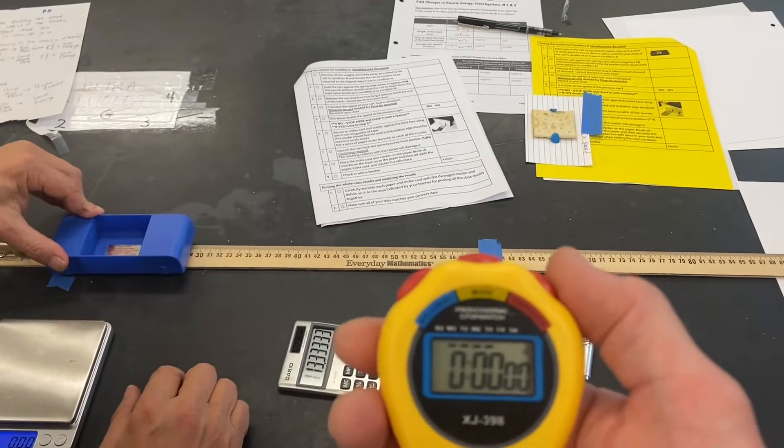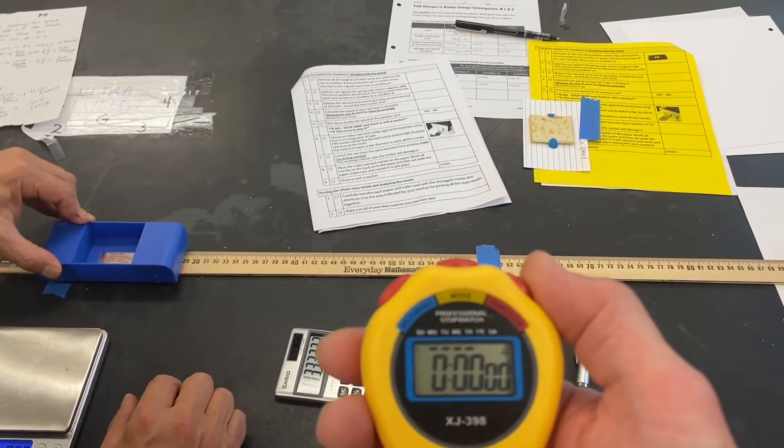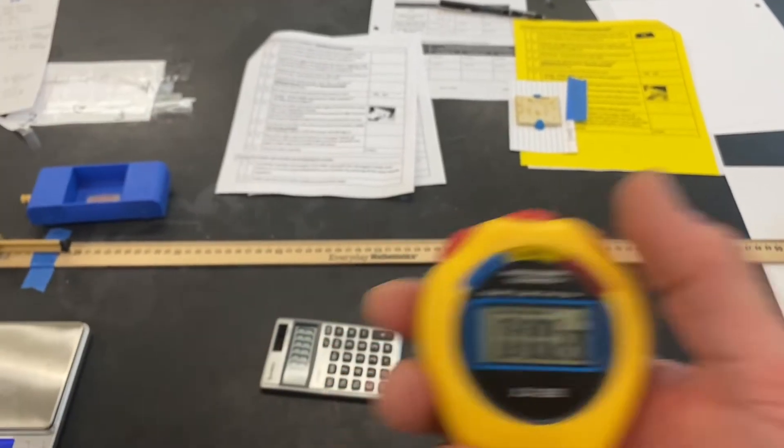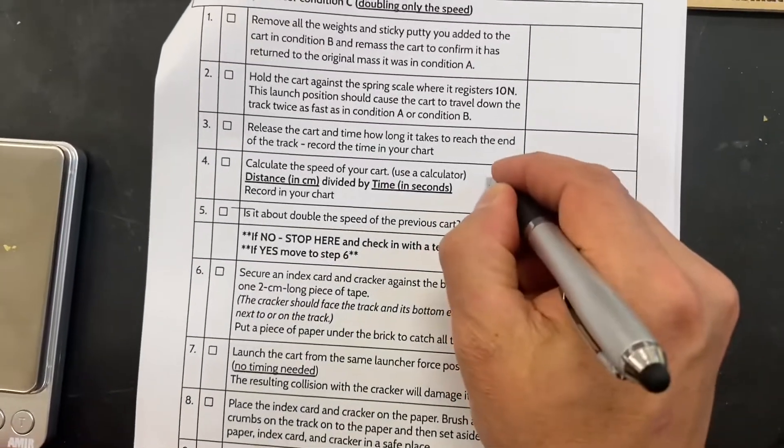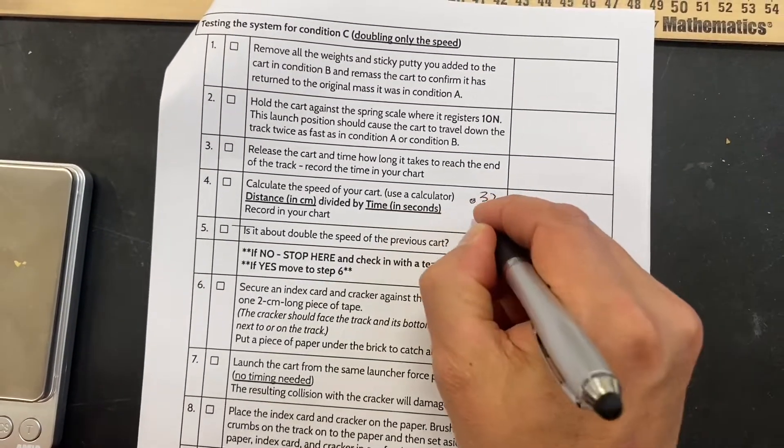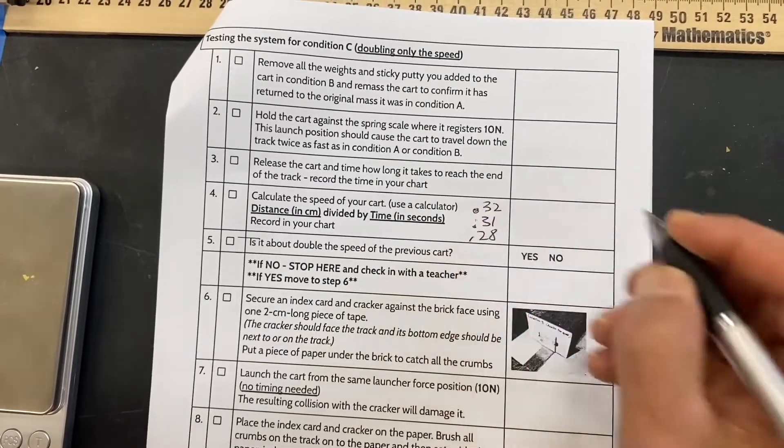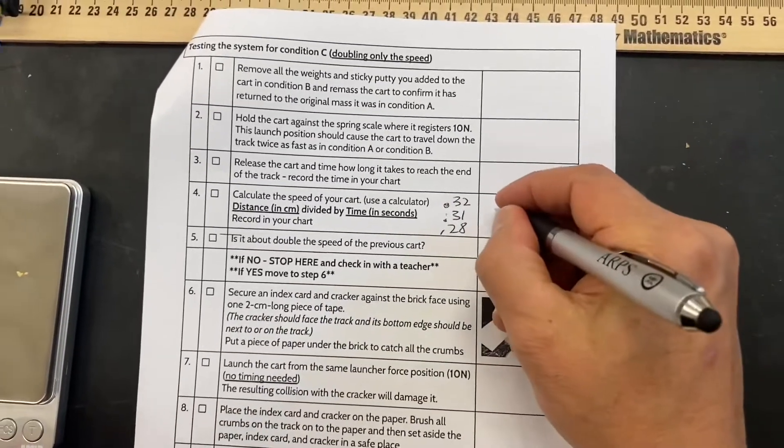Three, 2, 1. 0.28. Nice. What do we get? We got 0.3, 0.31 or something like that and 0.28. So that's going to round about 0.3.